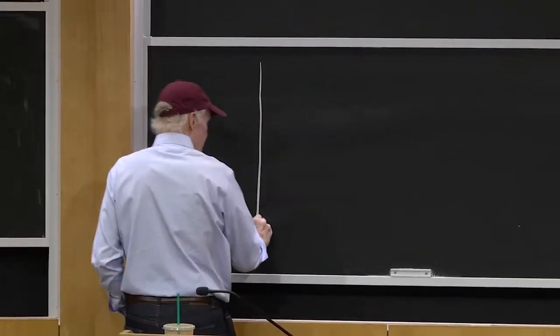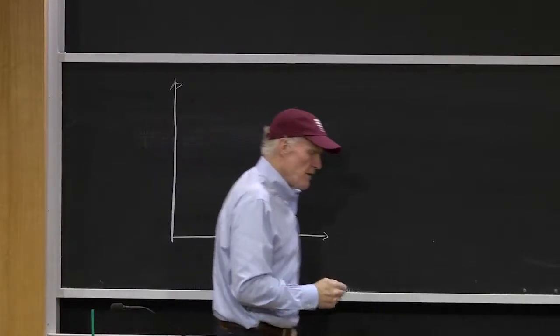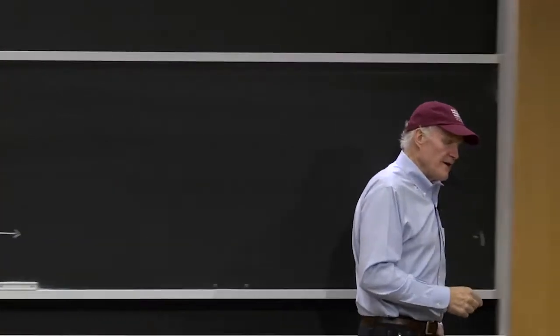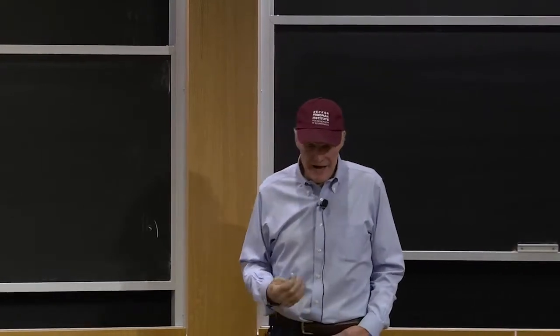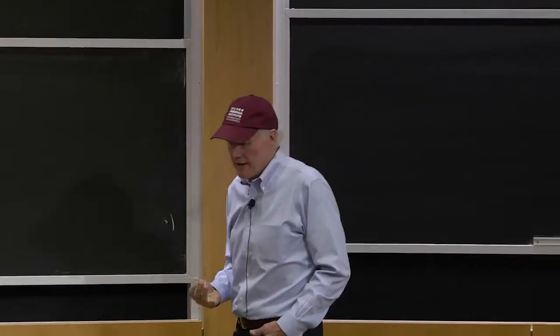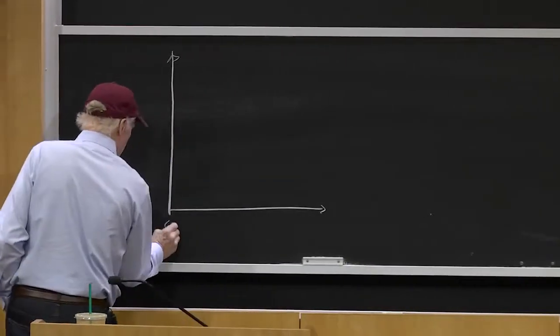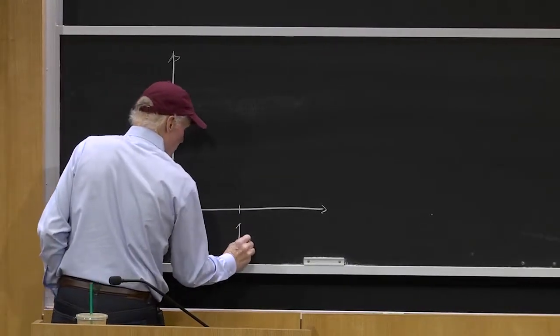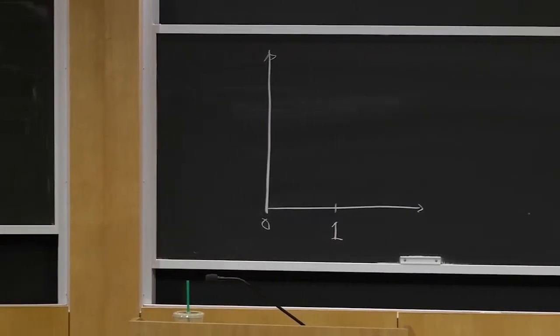We're talking about demand. At the end of class last time we were discussing a polar case where each person decides how much of a good to buy, in particular a case where they only buy zero or one. It's called a discrete choice model, and this is the simplest discrete choice model - whether you either do or you don't.